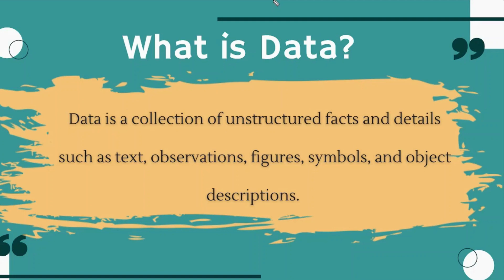Data can be anything. If you talk about physically, then anything written on a piece of paper will be called data. So your notebooks, books, and documents — if anything is written on them, that will be called data. Now, if we talk about data mainly in the field of science, then data is different types of information that usually is formatted in a particular manner.